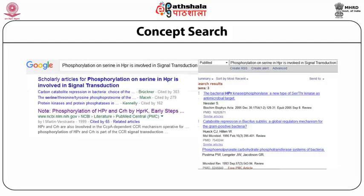In the present example, the first record in the retrieved list is stored in the PubMed Central bibliographic database available at the National Center for Biotechnology Information. This is a research paper on the concept that signal transduction is due to phosphorylation on serine in HPR. Interestingly, searching PubMed at NCBI itself did not retrieve the record retrieved by Google. This shows that concept search is implemented at Google but not at NCBI. Therefore, to find relevant records in large unstructured databases such as bibliographic databases, even PubMed, users may follow the Google route.